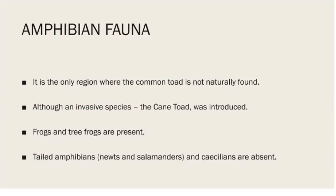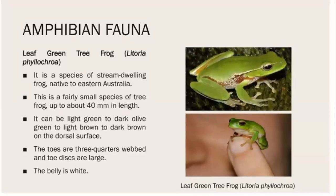Regarding amphibian fauna, the Australian region is the only region where the common toad is not naturally found — an important exam point. An invasive species, the cane toad, was introduced here. There are no caecilians or tailed amphibians present, but frogs and tree frogs are abundant in this region.